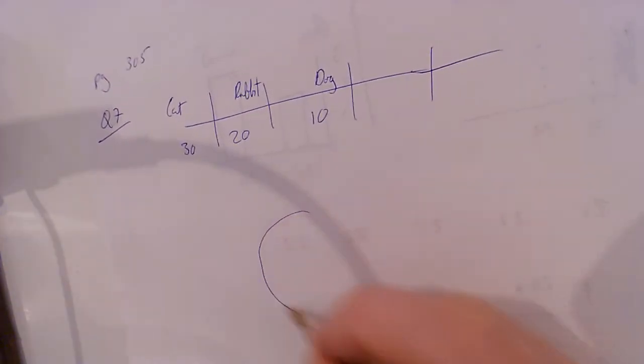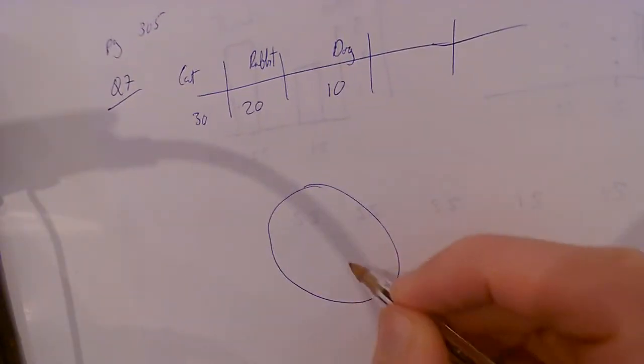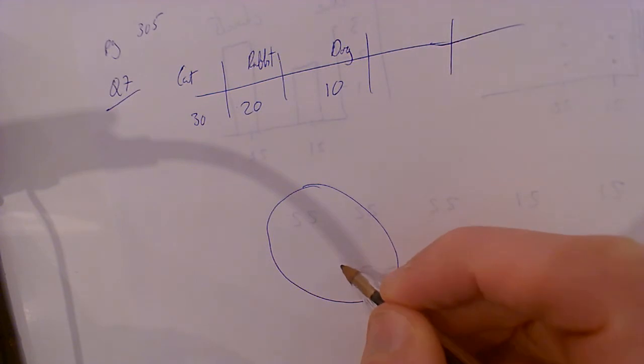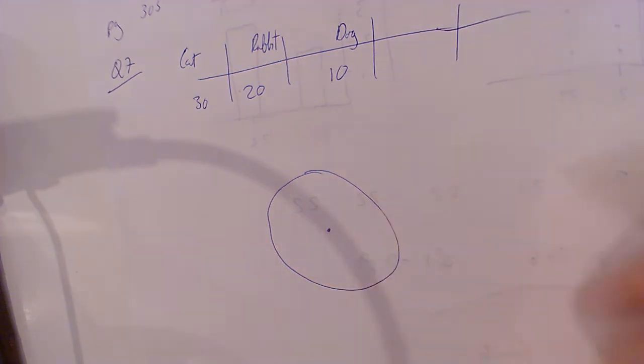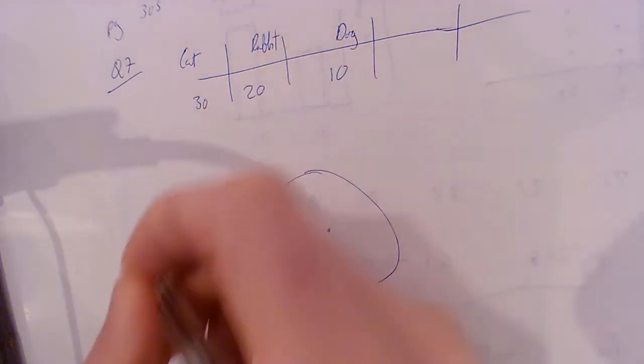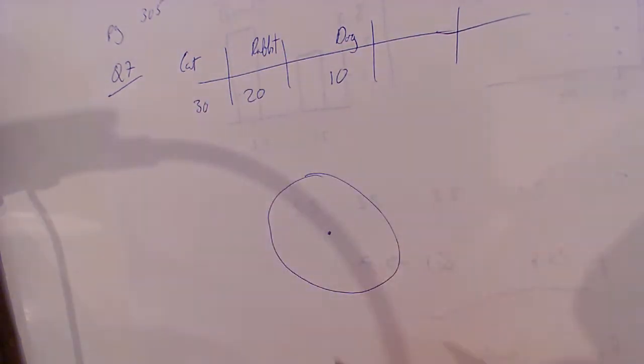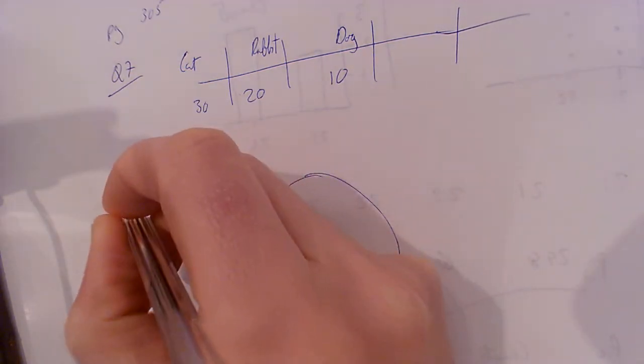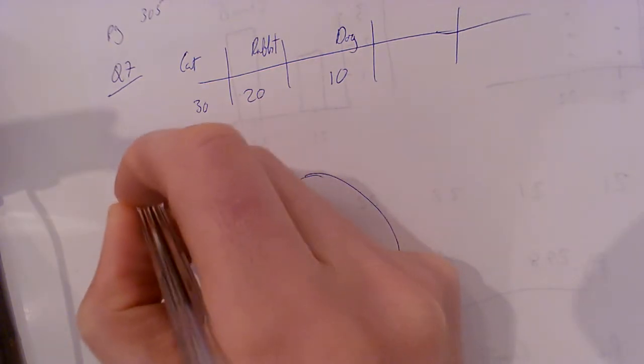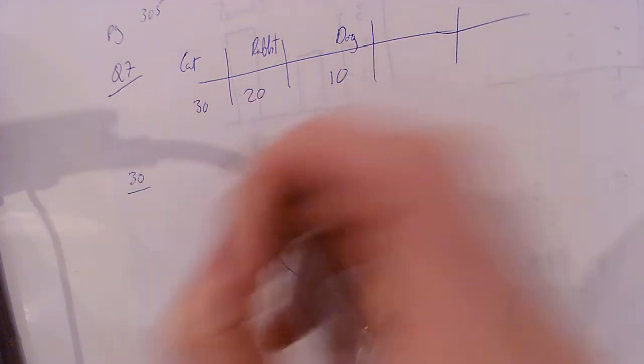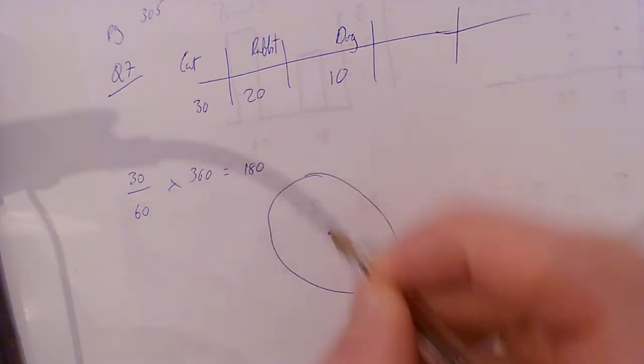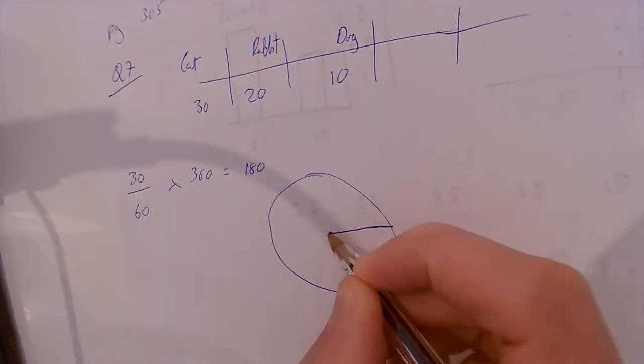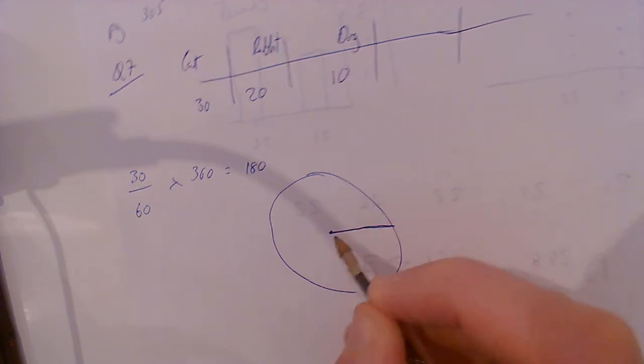I'm going to draw a pie chart. As you can see, I don't have a protractor or compass. Okay, cat - we need to get that into degrees. There's 360 degrees in a full circle. We need to know what section it is. Well, that's 30 out of 30 plus 20 plus 10, which is 60, times 360. That's 180, so I'll draw a line straight across to start off with.